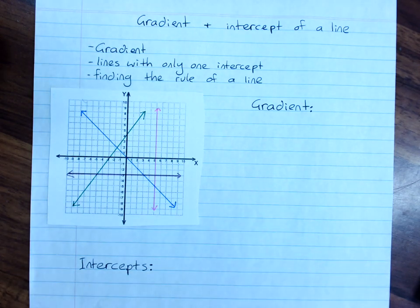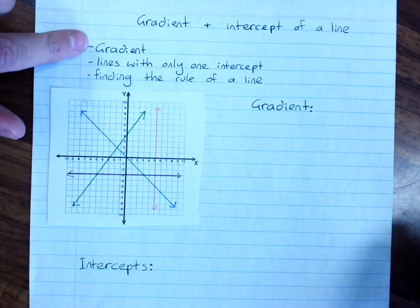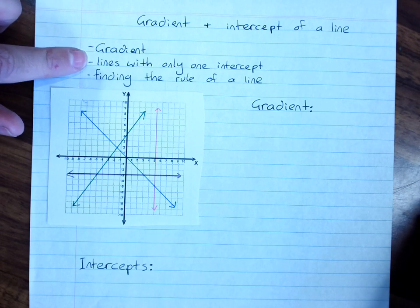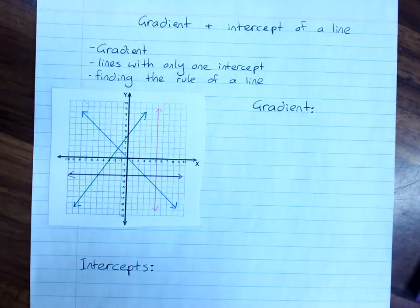So we're looking at the gradient and intercept of a line. We'll look at gradient, lines with only one intercept, and then a big important skill, finding the rule of a line.